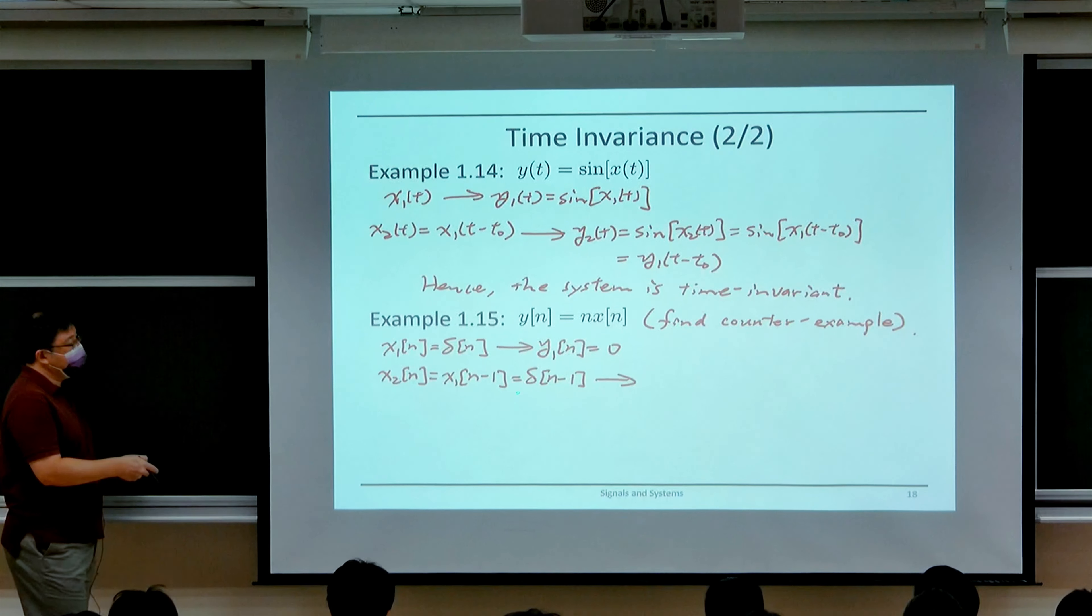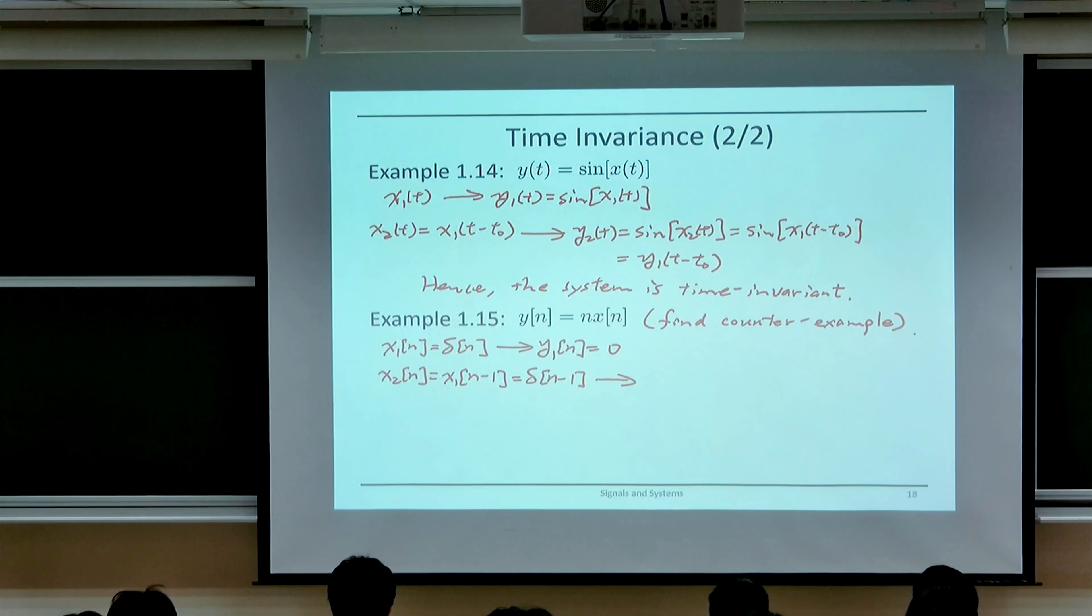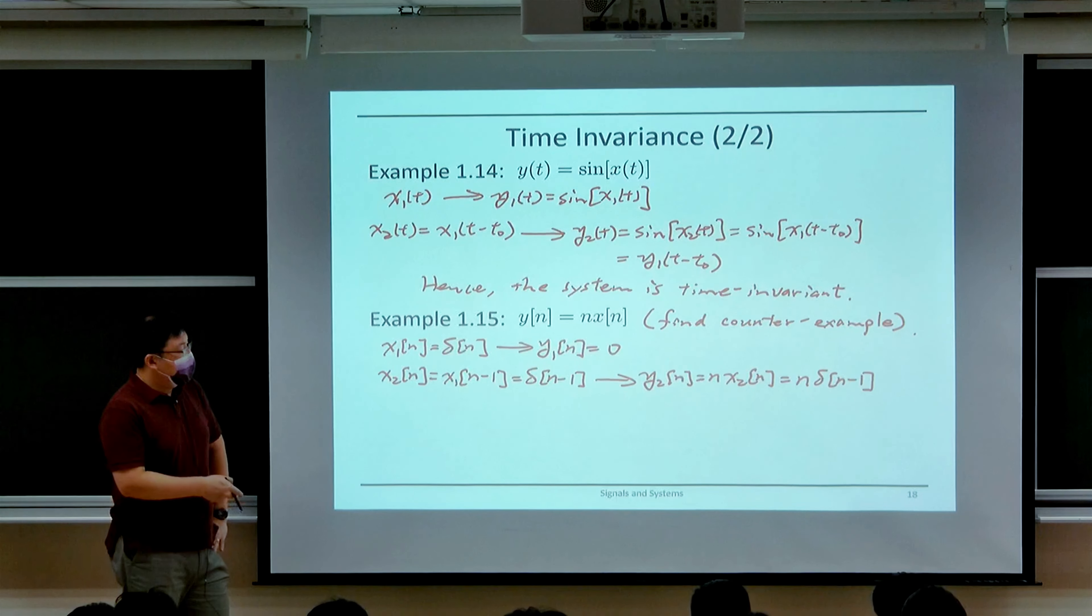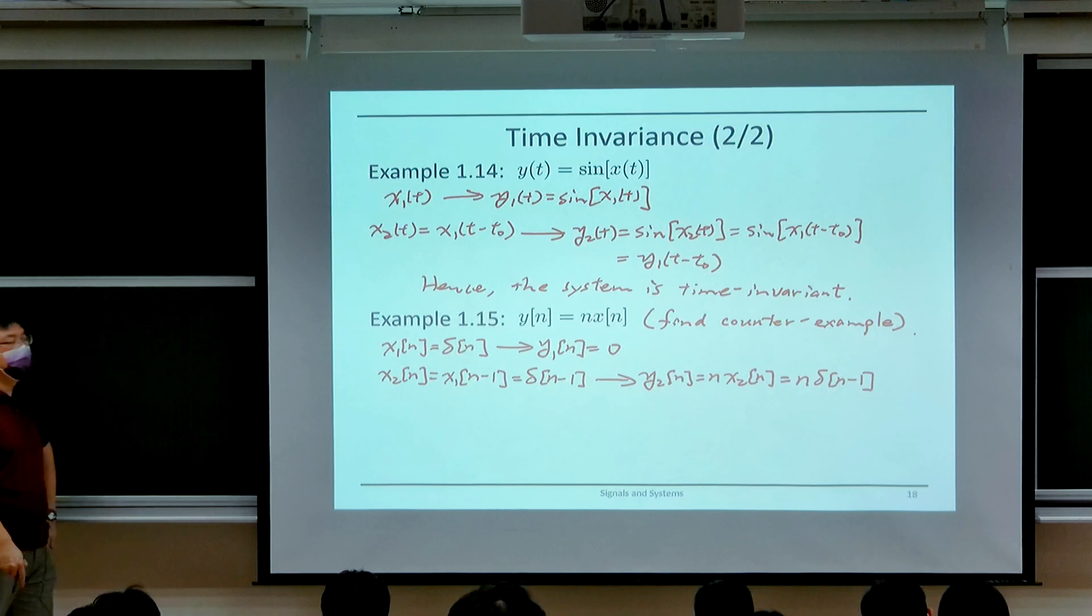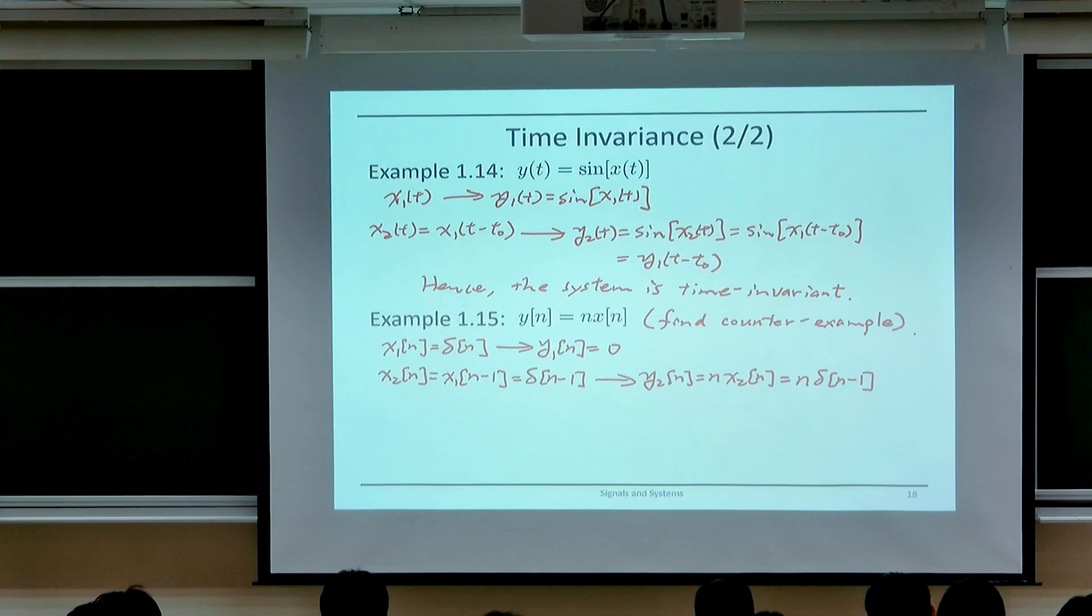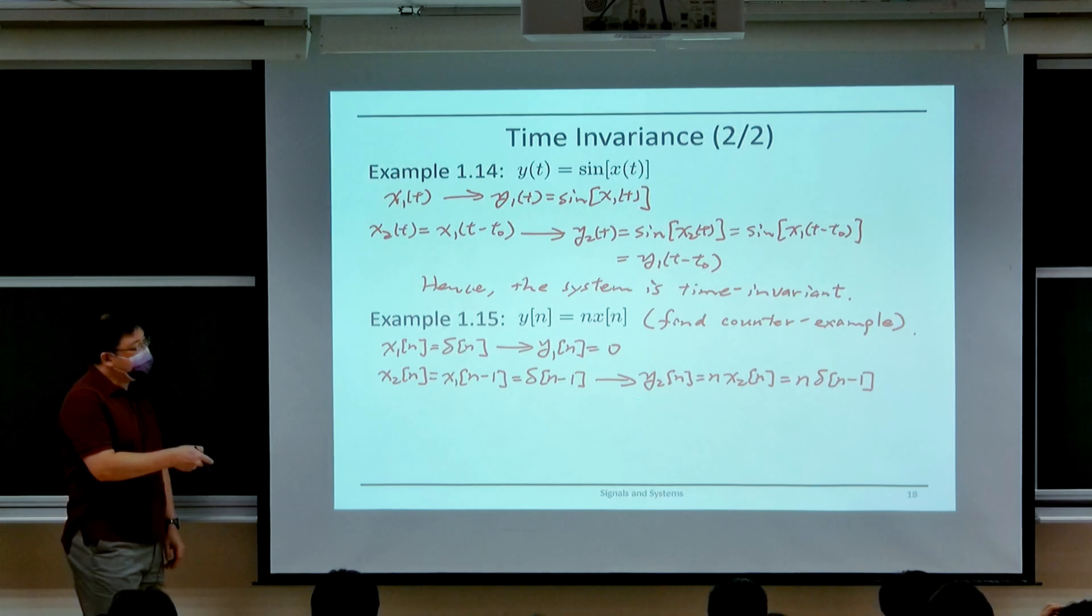Now, suppose we substitute this inside. We have y₂[n] equal to n times x₂[n], which is equal to n times delta of n minus 1. So here, y₂ is the output corresponding to the input x₂. I just substitute x₂ inside here, and x₂[n] is delta of n minus 1.